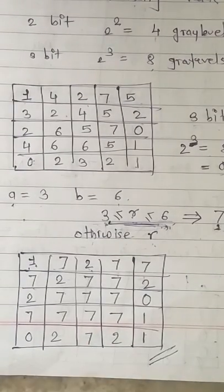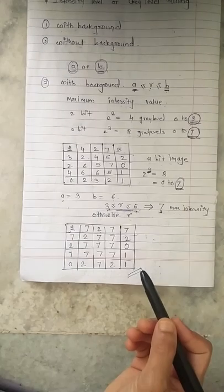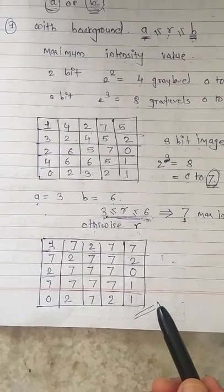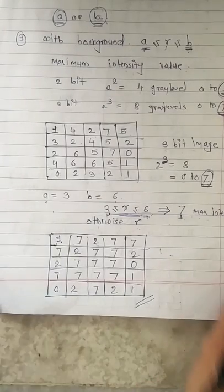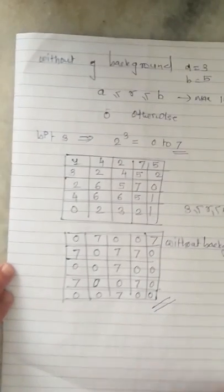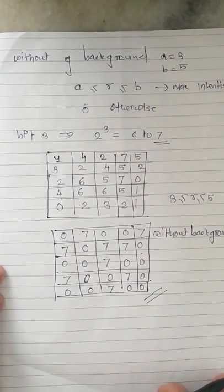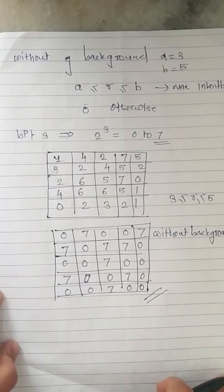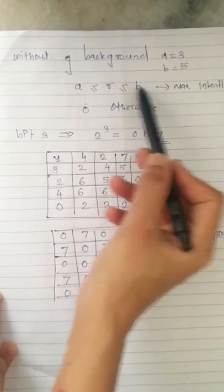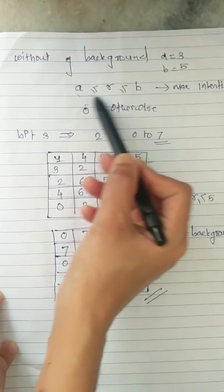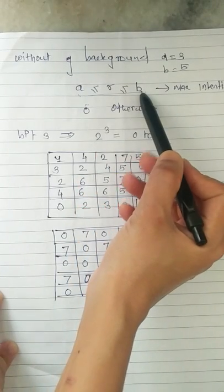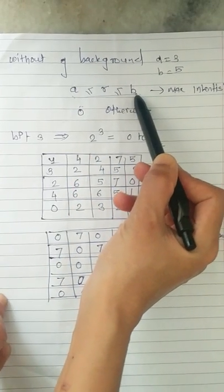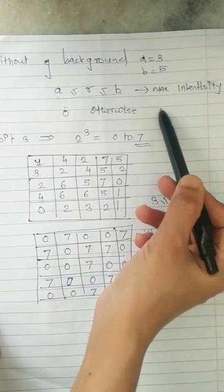This means that depending on the value of A and B, you are going to replace intensities that belong to the specific range with the maximum intensity; otherwise you are going to keep them as they are. Now we are going to focus on intensity level slicing without background. In without background, we are going to check whether the input intensity of the given image belongs to this range. If they belong to the particular range then you are going to replace it with maximum intensity.